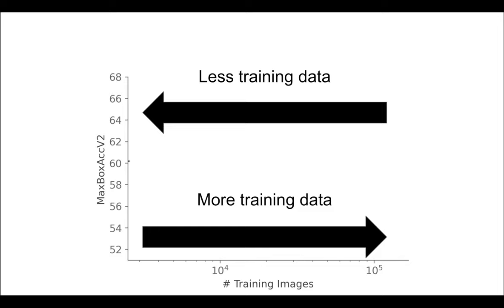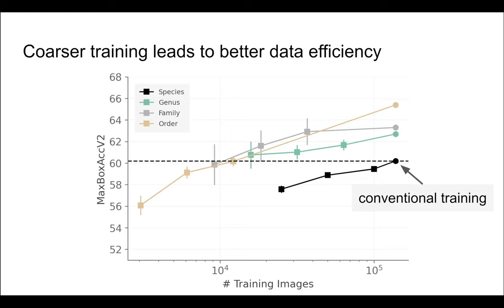We also study localization performance as a function of the amount of training data for different label granularities. We find that training on coarse labels is more data efficient than conventional training.